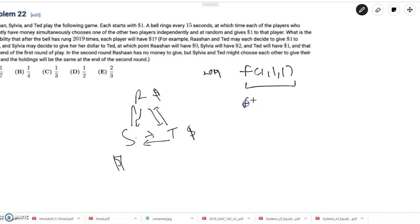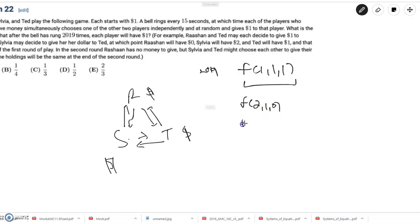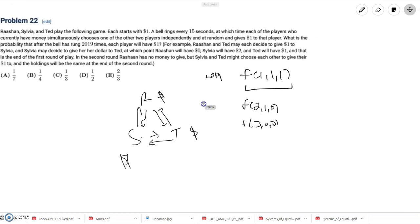There's F of 1, 1, 1, there's F of 2, 1, 0, and there's F of 3, 0, 0. And it doesn't matter which player has the 2, which player has the 1, and which player has the 0. And same with 3, 0, 0, because their probability will be the same after some amount of turns, since they all start with one dollar. So we don't have to distinguish.